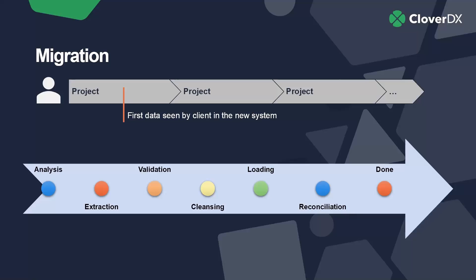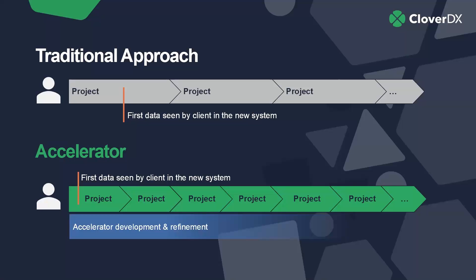This is your traditional migration — just a single system-to-system implementation. But the whole point of this webinar is to provide a framework for this to be done in the future. We provide what are essentially called accelerators. The accelerator concept is the idea that we're able to get data into a client system as soon as possible — sooner on the first try. Throughout that process, we create an accelerator that we refine and extend to other parts of the migration, making future implementations and migrations much easier for us as an implementer or consultancy, and for our customers as well.